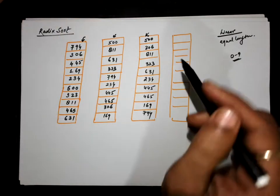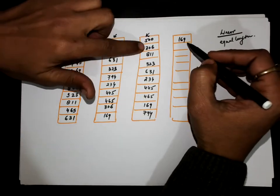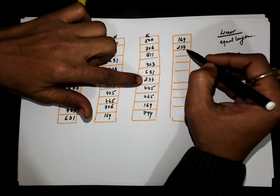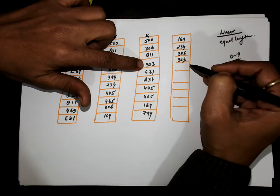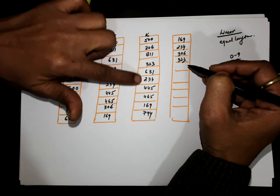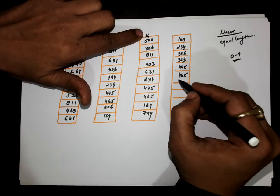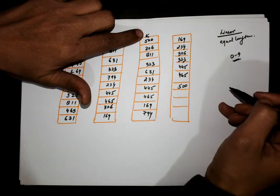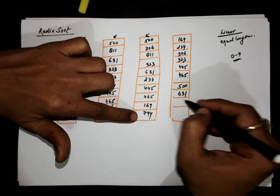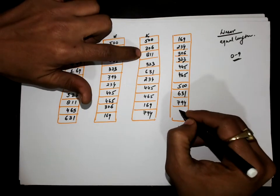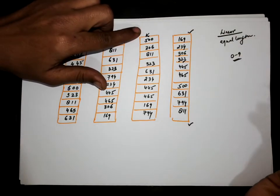Now we sort with the hundreds place radix. There is no zero. For one, there is 169. For two, there is 234. For three, there are two threes — 306 and 323. For four, there is 445, then 465. For five, there is 500. For six, there is 631. For seven, there is one. For eight, there is 811. Now you can see the numbers are in ascending sequence.